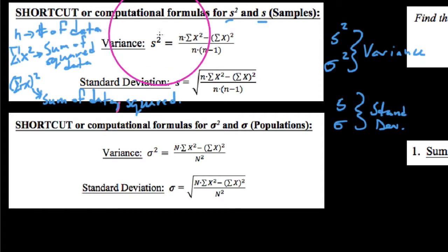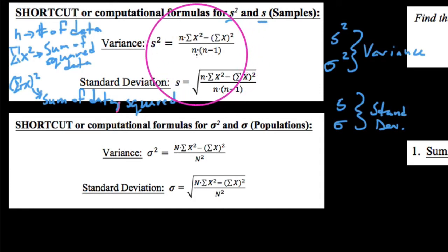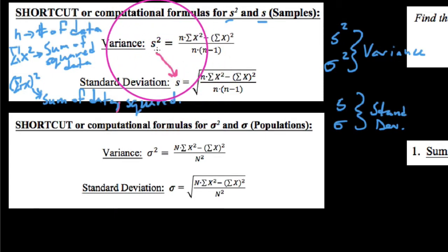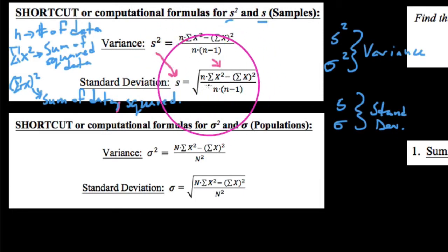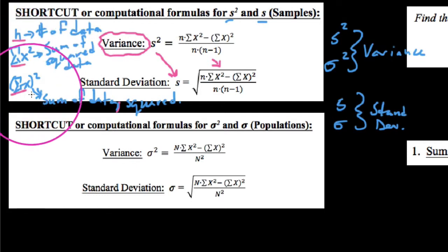So here's our formula: to find the variance for a sample, we take the number of data times the sum of the squared data, minus the sum of the data squared, all over n times (n minus 1). For the standard deviation formula, instead of S squared we have just S, because the standard deviation is the square root of the variance. So you need to know how to find the variance, and then take the square root to get the standard deviation.